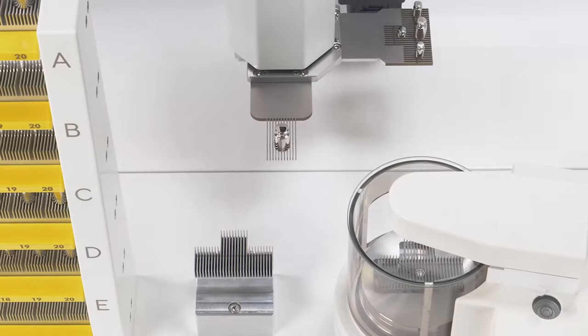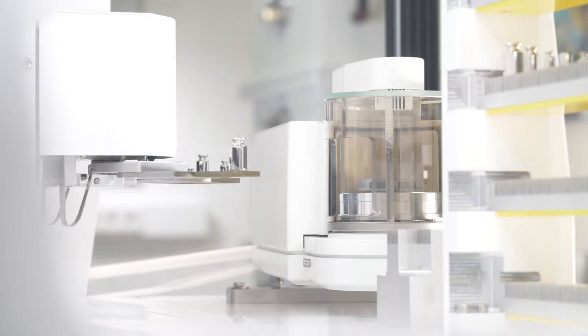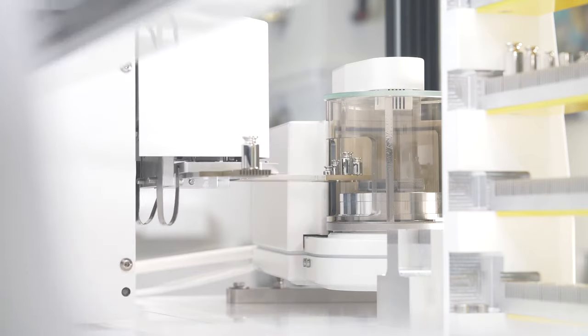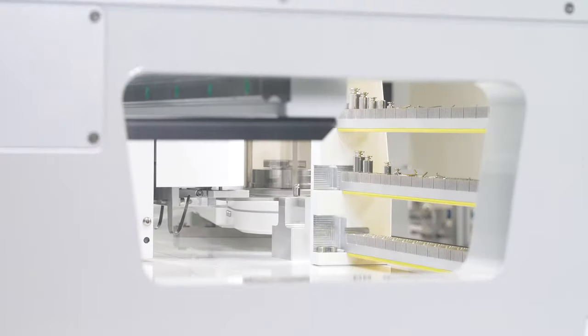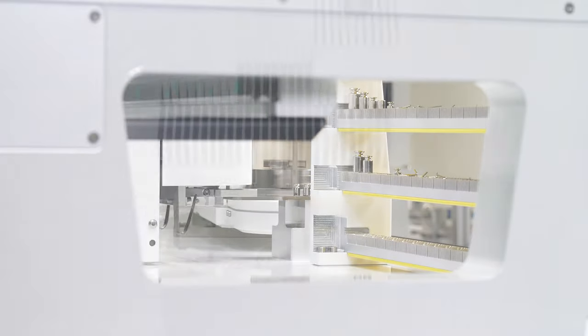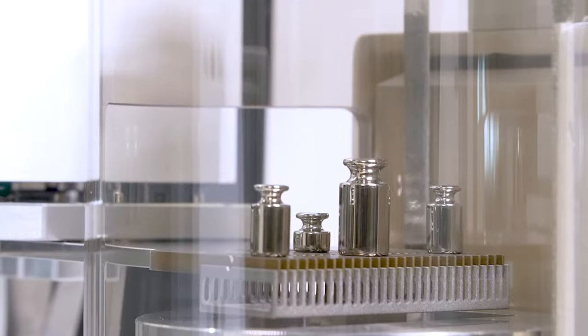Designed for simultaneous management of reference and test weights, the Sartorius dual robotic arm system with the patented multi and single weight handlers speeds up the processes with its most efficient motion sequences and handles the weights with the highest precision and consistency.